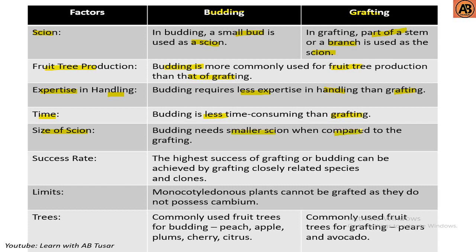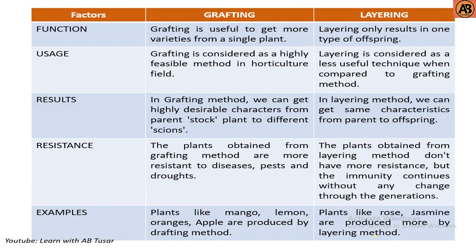In terms of size of scion, budding needs a smaller scion compared to grafting. The highest success rate can be achieved by grafting closely related species and clones. Monocotyledon plants cannot be grafted as they do not possess cambium. Fruit trees commonly used for budding include peach, apple, palms, cherry, and citrus; commonly used in grafting are pears, avocado, etc.